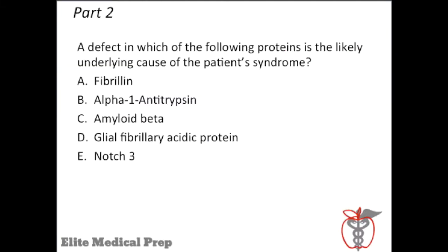After facing a fairly complex clinical vignette, we now face a straightforward question — the second part of our two-part question. It says: a defect in which of the following proteins is the likely underlying cause of the patient's syndrome? Answer choices: A, fibrillin; B, alpha-1 antitrypsin; C, amyloid beta; D, glial fibrillary acidic protein; E, notch-3.